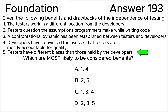Statement 5: Testers have different biases than those held by the developers. The primary benefit of independence in testing is that testers are most likely to identify different types of failures and defects compared to developers, due to their varied backgrounds, technical viewpoints, and potential biases, including cognitive bias. Thus, this is an advantage.